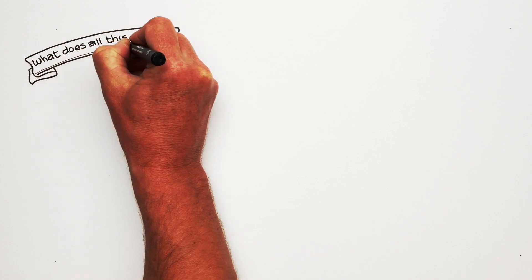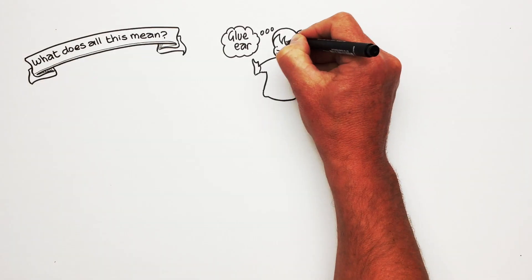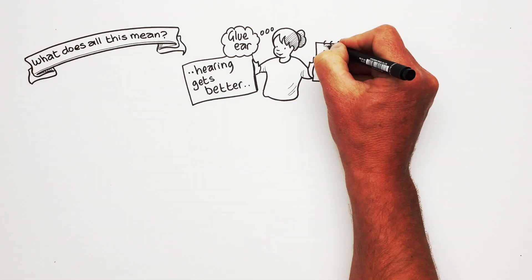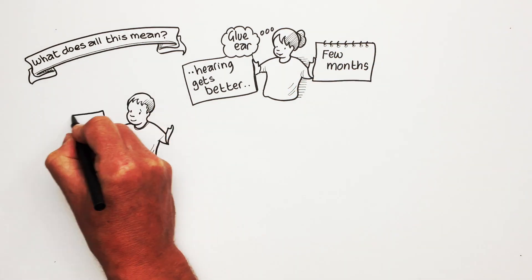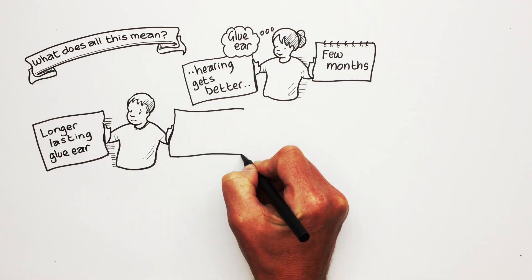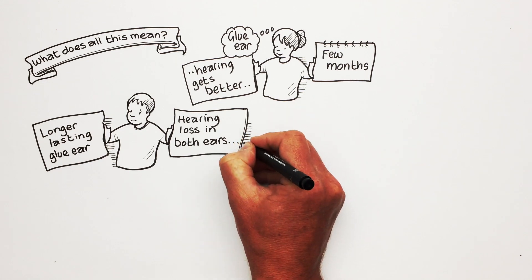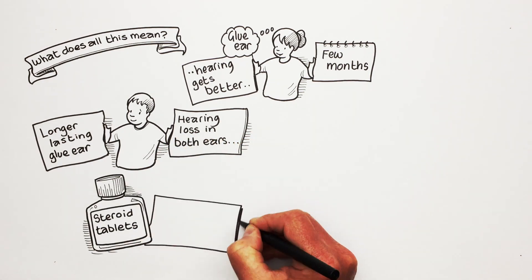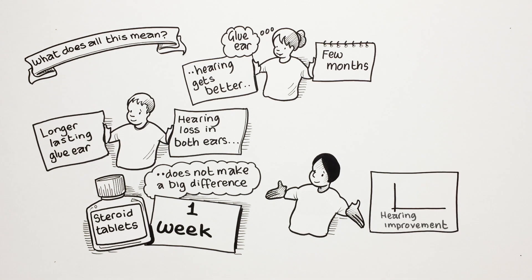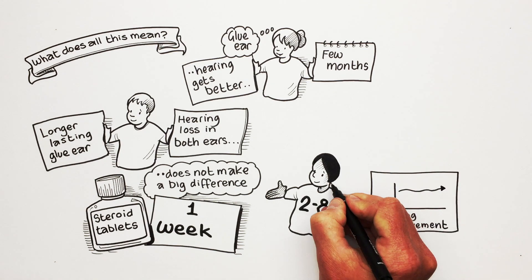So what does all this mean? Most children with glue ear will find that their hearing gets better within a few months, even in children with longer lasting glue ear that causes hearing loss in both ears. Treatment with steroid tablets for a week does not make a big difference to how quickly hearing improves in two to eight year old children.